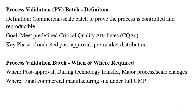These batches can be considered as critical batches before the product launch. The goal of PV batches is to meet the predefined critical quality attributes (CQAs) of the product. These are conducted post-approval and pre-market distribution. Process validation batches are required post-approval during technology transfer, for major process and scale changes, and must be manufactured under the commercial manufacturing site with full GMP compliance.